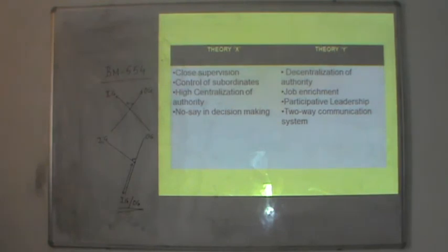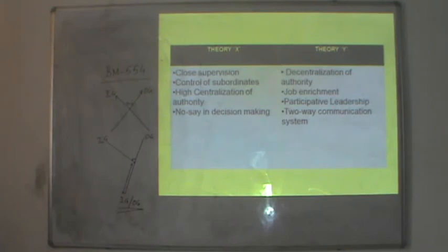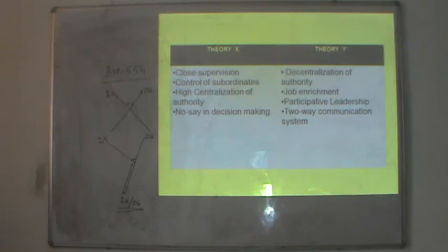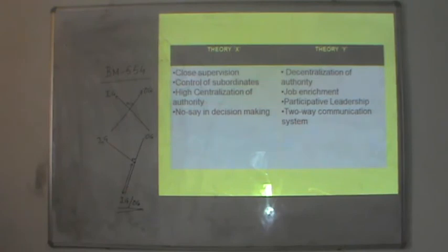The difference between Theory X and Theory Y can be explained with a chart. Theory X has close supervision, control of subordinates, high centralization of authority and no say in decision making. Theory Y has decentralization of authority, job enrichment, participative leadership where the leader seeks guidance and suggestions from subordinates, encourages them to participate in decision making, and a two-way communication system.